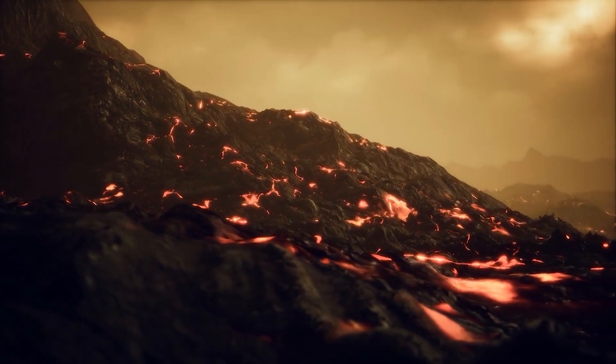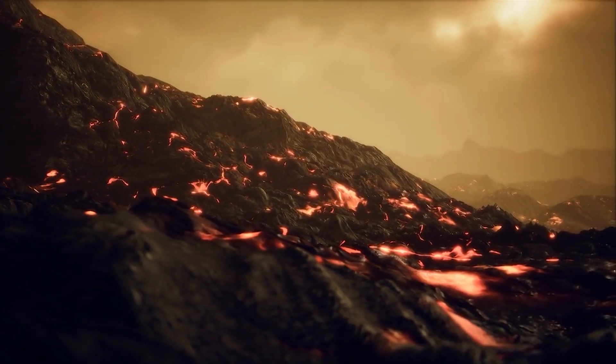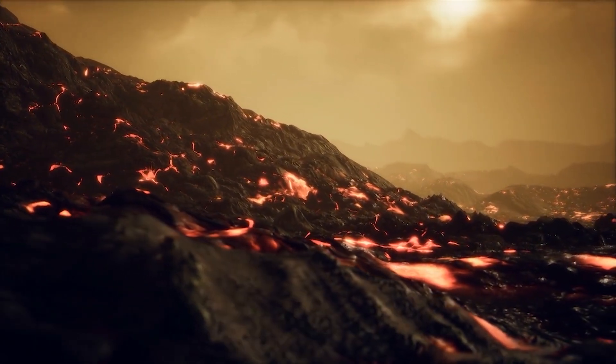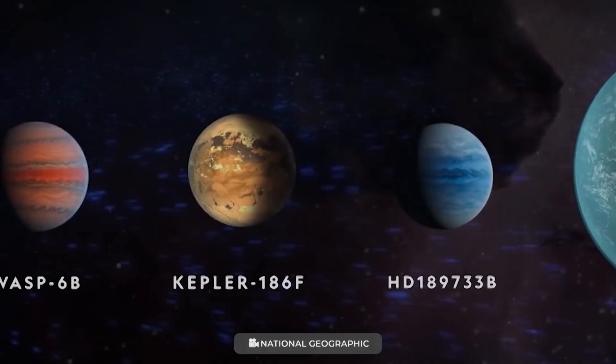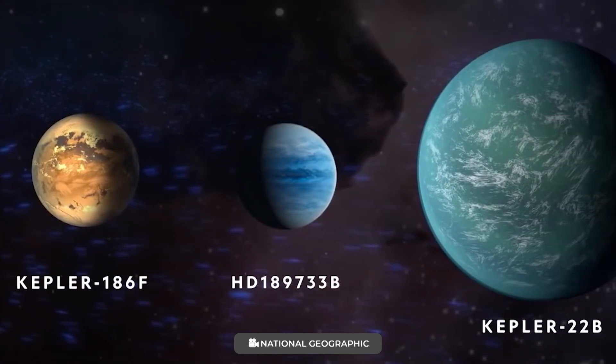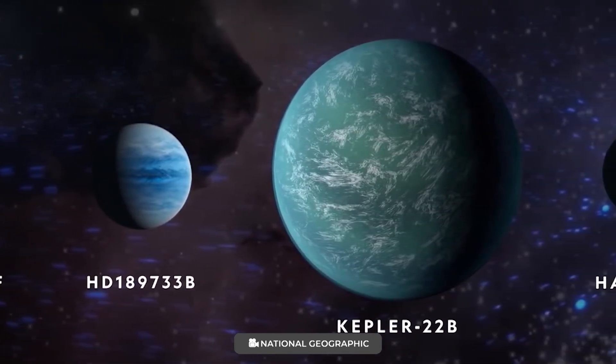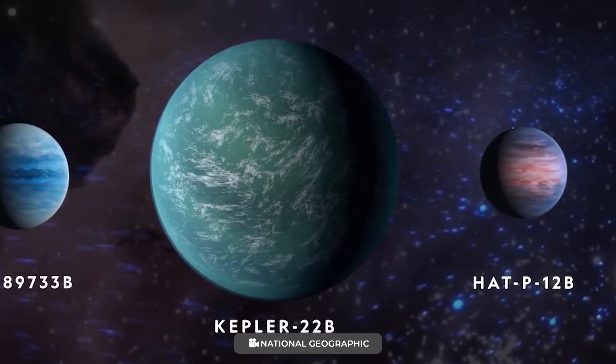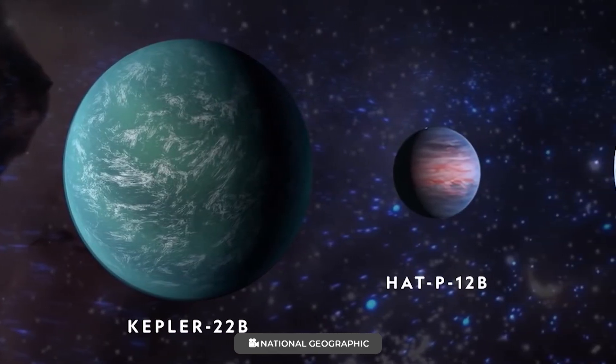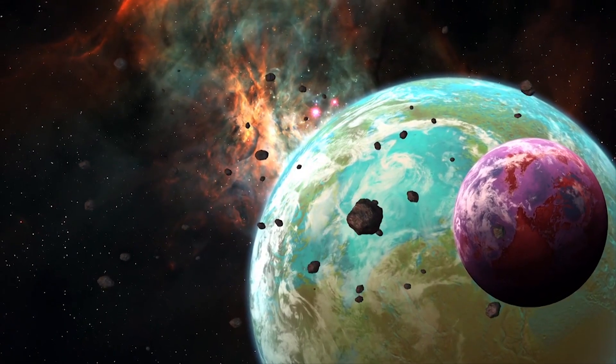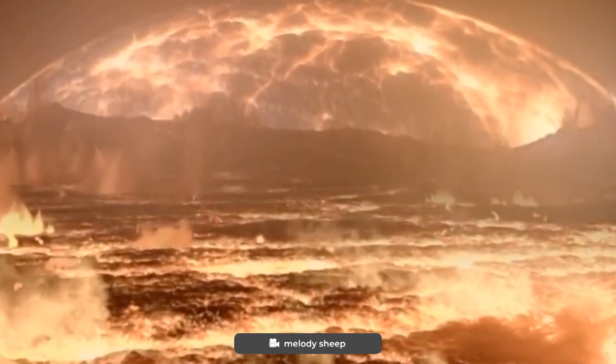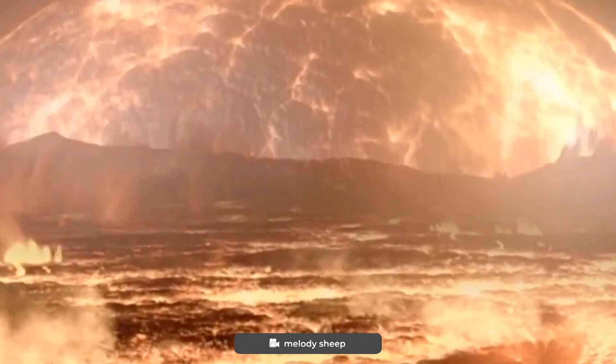If the planet is volcanically active, the spectrum could also reveal the presence of trace amounts of volcanic gases. The importance of these observations goes far beyond just two of the more than 5,000 confirmed exoplanets in the galaxy. They will give us fantastic new perspectives on Earth-like planets in general, helping us learn what the early Earth might have been like when it was hot like these planets are today, said Kreidberg.